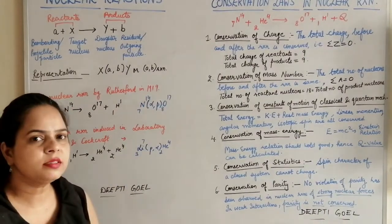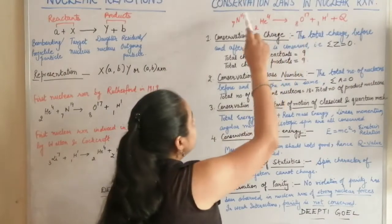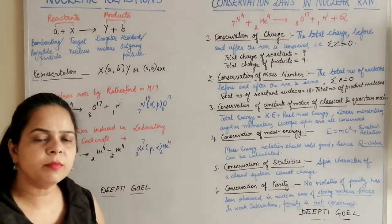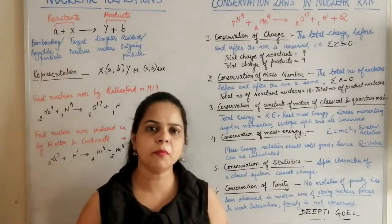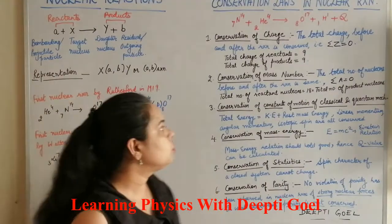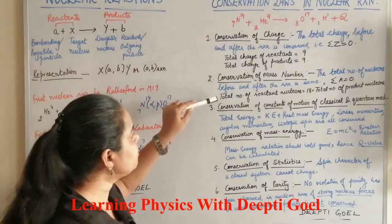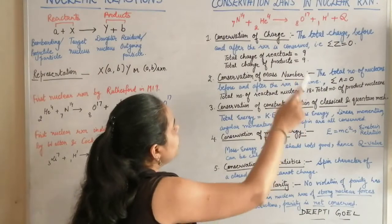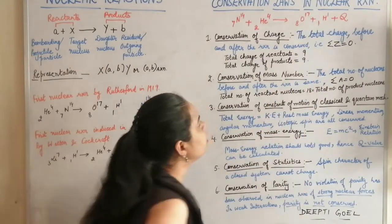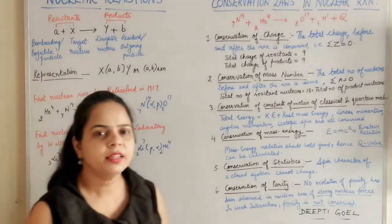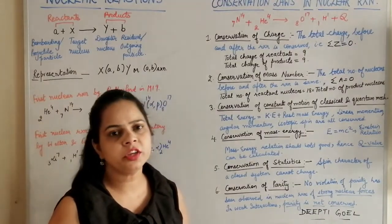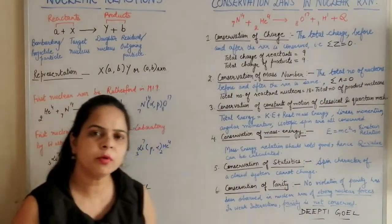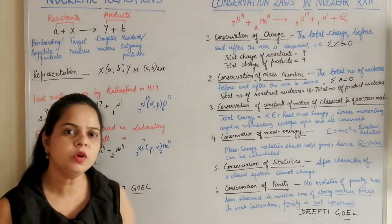Next is conservation of mass number. The superscript represents the mass number. The sum of mass numbers on the reactant side must equal the sum on the product side. In this reaction, the reactants give 14+4=18 nucleons, and the products give 17+1=18 nucleons — also conserved. The summation of A, the mass number or nucleon number, should equal zero.